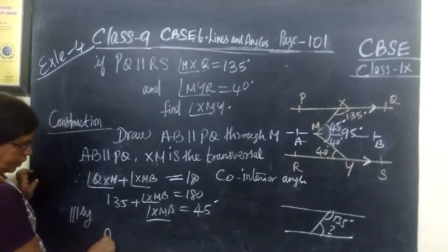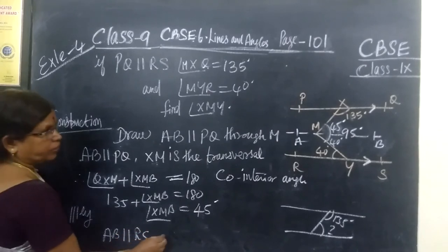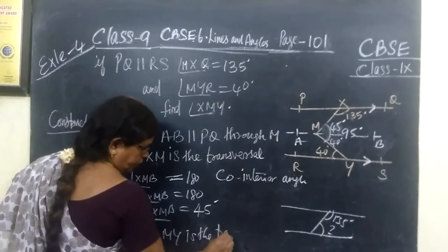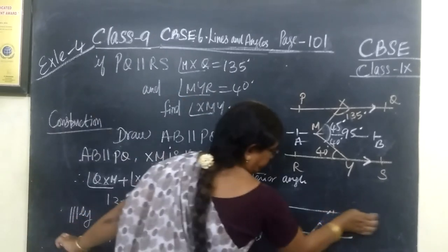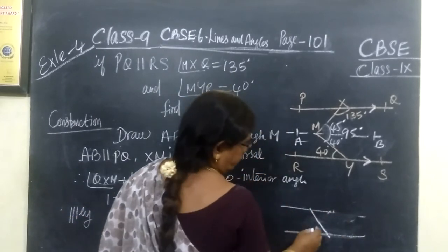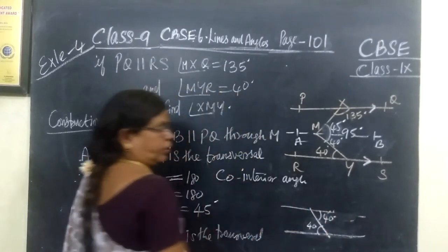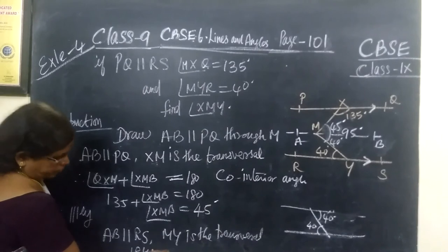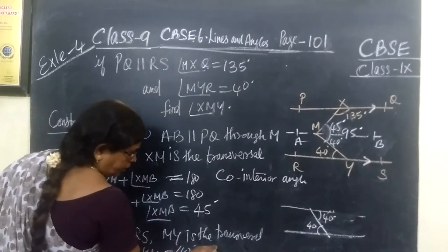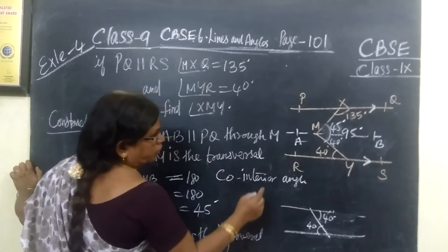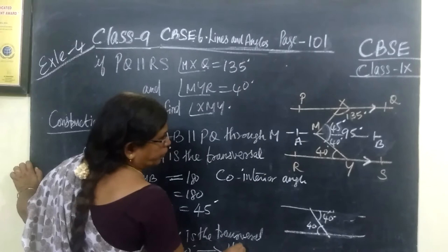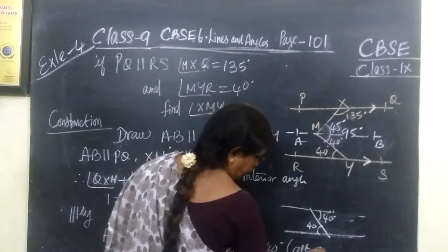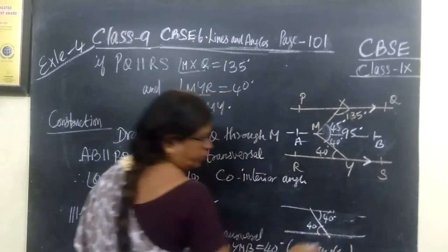Similarly, which is parallel? AB parallel to RS and what is the transversal? MY is the transversal. Therefore, taking this way, if it is 40, this side also 40 because alternate angles are equal. So angle RYM equal to 40 implies YMB, that also 40. Then what is the reason? Alternate angles are equal.